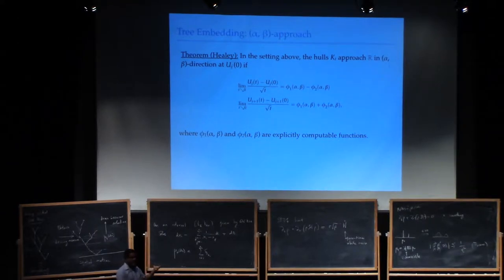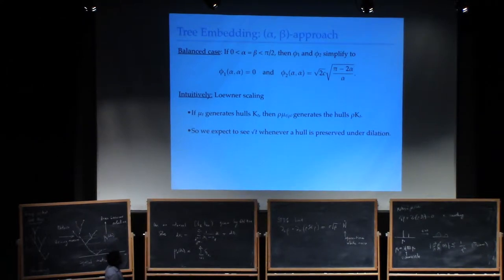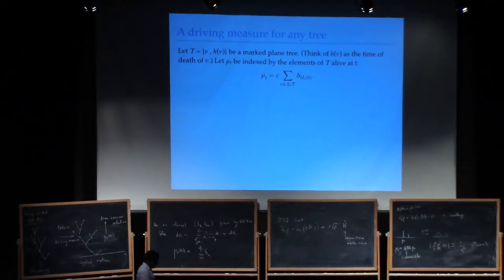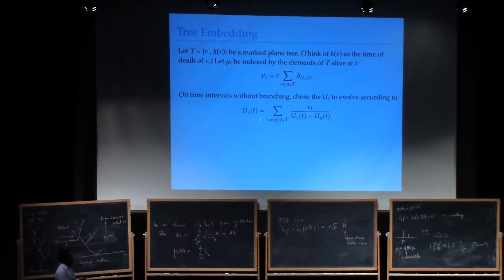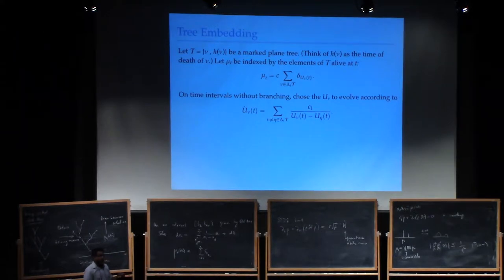This is not quite a standard fact in Loewner theory despite its simplicity, and this is one of the main calculations that we did. The main point is that if you drive a Loewner evolution with a forcing that is like Dyson forcing — or more precisely, coulombic repulsion — then this is perfectly suited to Loewner evolution with branching.